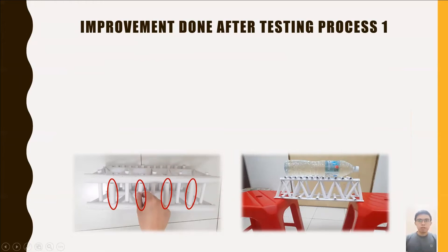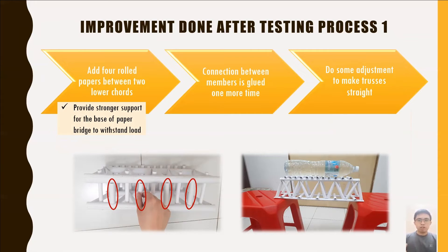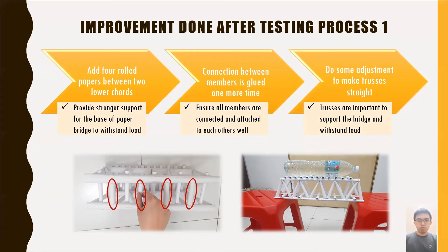Pertaining to the observations from Testing Process 1, we found that the paper bridge was unstable and unable to withstand the load of the 1.5-litre mineral water. This is because the base of the paper bridge was not strong enough. Therefore, we improved the design by adding 4 rows of paper with a length of 16 mm between the two lower chords, to provide support for the base. Since some members or trusses did not connect and attach to others well, additional superglue was applied and members were held in place until the glue dried. We also made adjustments to make the trusses straight, as the trusses need to support the bridge and distribute the loads exerted on it. Furthermore, we changed the material from A4 paper to A3 paper because the thickness and hardness of A3 paper is greater than that of A4 paper.